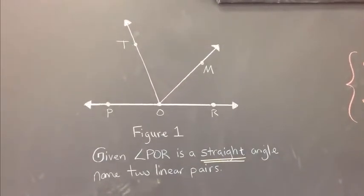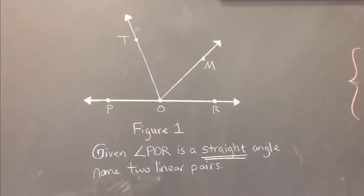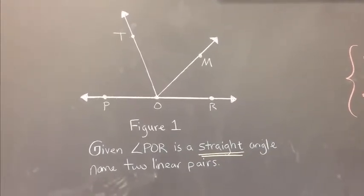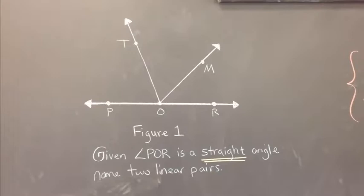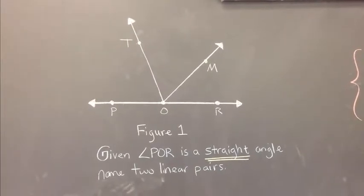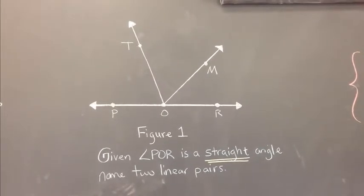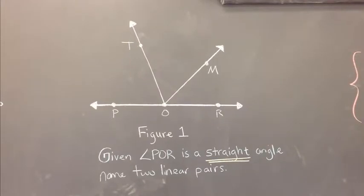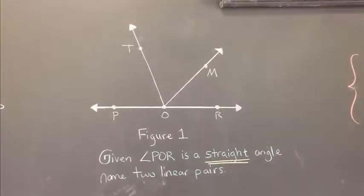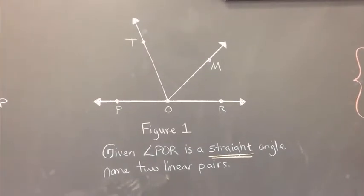Well, given that angle POR is a straight angle, let's name two linear pairs. A straight angle—the measure of a straight angle is always 180 degrees. POR forms a straight line, or what we call a straight angle.